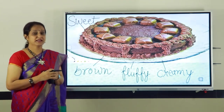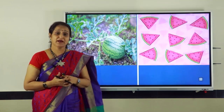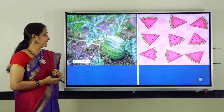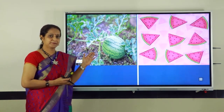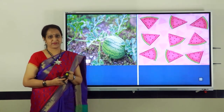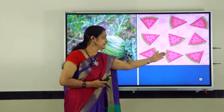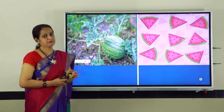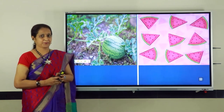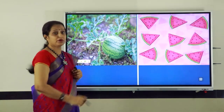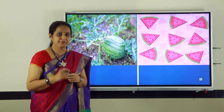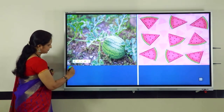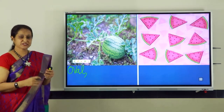Many describing words can be used for nouns. We have another picture on the screen. On the left part we can see a watermelon, and on the right hand side we can see some slices of watermelon. First, let us describe the watermelon on the left hand side. What describing words come to your mind when you look at the watermelon? Let us write them down one by one. The watermelon is oval. What is the shape of the watermelon? The watermelon is oval.